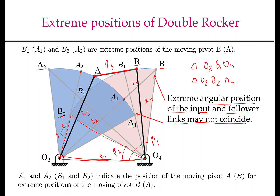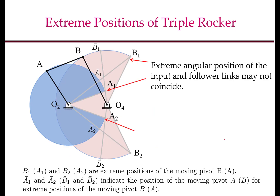In an analogous fashion, using the law of cosines, I can use the triangles O2, A1, O4 and O2, A2, O4 to compute the range of motion of the input link O2A. So in essence, you can compute the extreme positions of both the input link and the output link using the law of cosines.